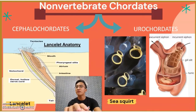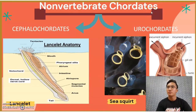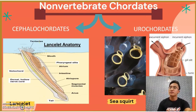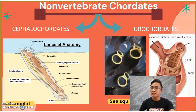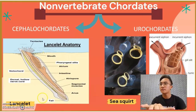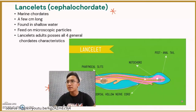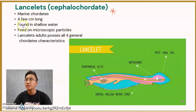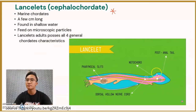Now I'm going to explain about the non-vertebrate chordates. Non-vertebrate chordates are divided into two groups: cephalochordates and urochordates. The example of cephalochordates is the lancelet, and the example of urochordates is the sea squirt. Lancelets are marine chordates, a few centimetres long, found in shallow water, and they feed on microscopic particles. Lancelet adults possess all four general chordate characteristics.